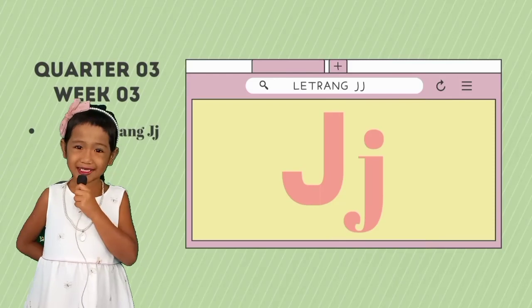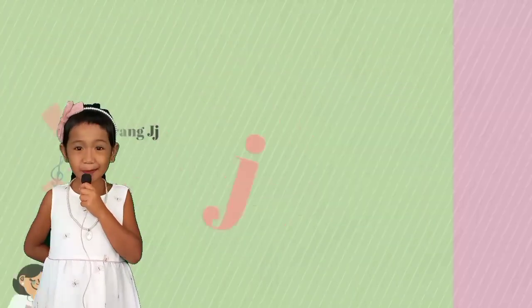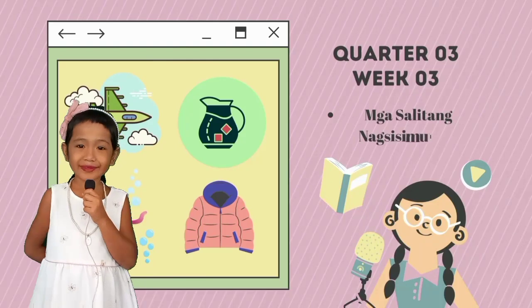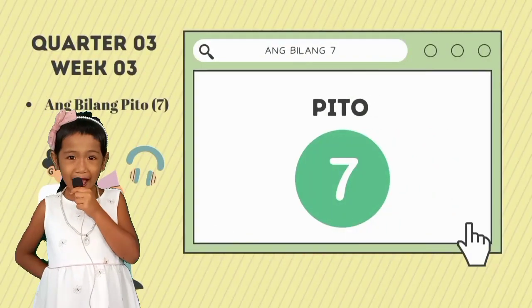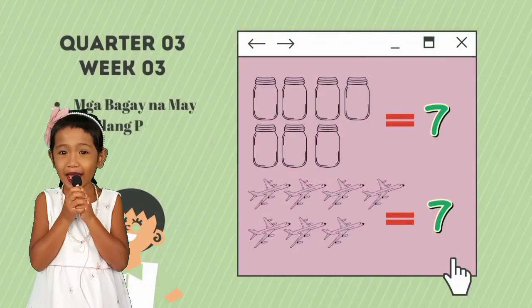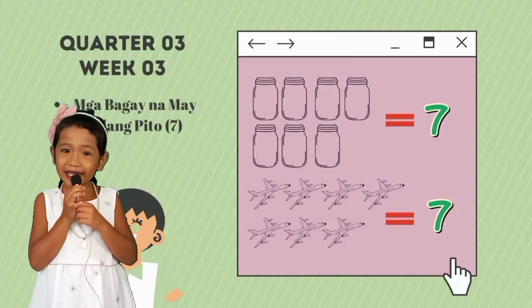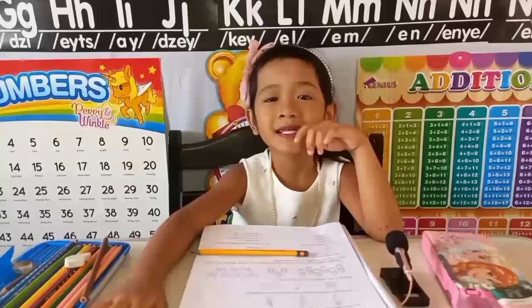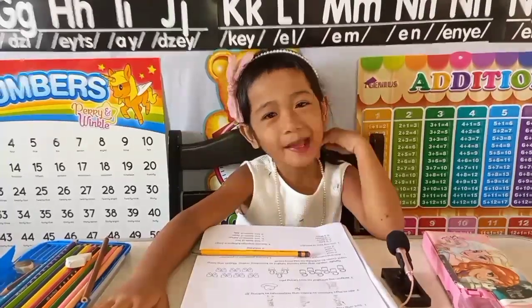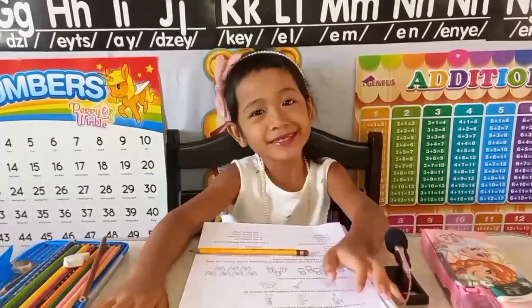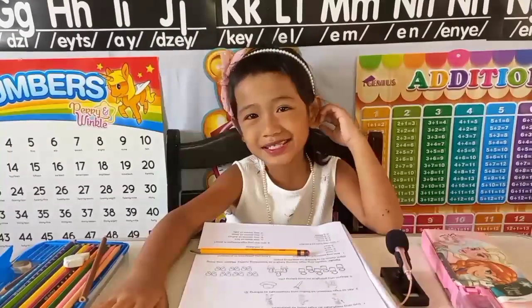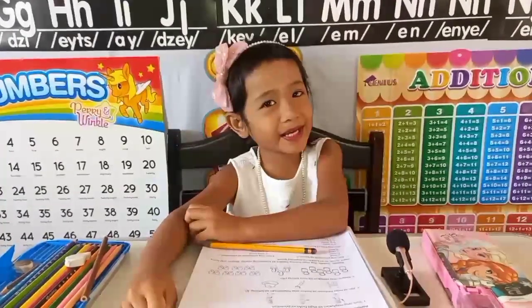Ngayong linggo, pag-aaralan naman natin ang letrang J — mga salita na nagsisimula sa letrang J. At aaralin naman natin ang bilang PITO, mga bagay na may bilang PITO. Sa una nating gawain, magbabalik-aral tayo tungkol sa mga tumutulong sa ating komunidad, mga lugar sa ating komunidad, at ang bilang PITO.